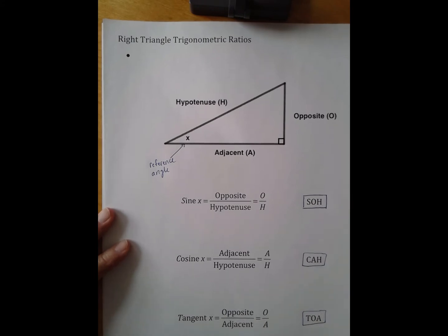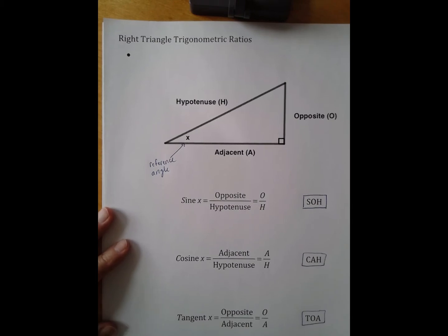So one way to remember the ratios is to memorize SOH-CAH-TOA. And that would be something that you could probably say to many adults in your life who have gone through trigonometry and they would recognize SOH-CAH-TOA.